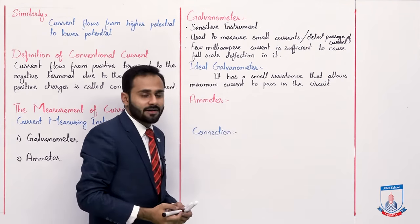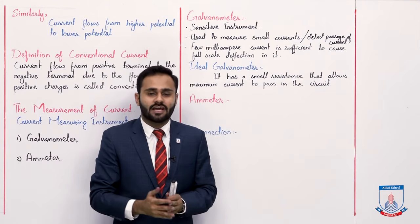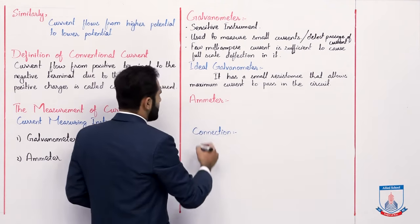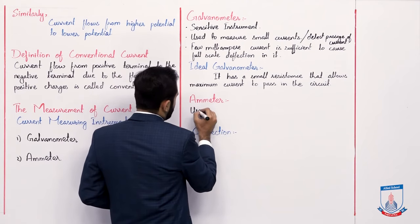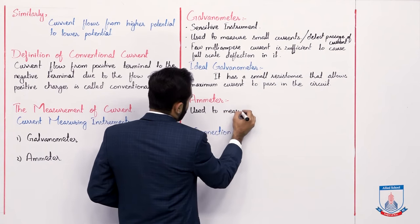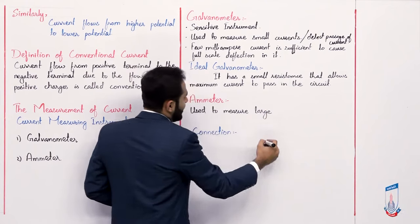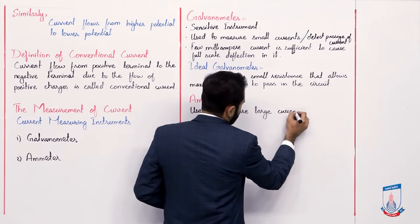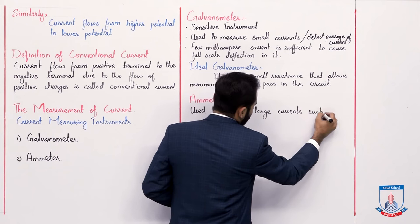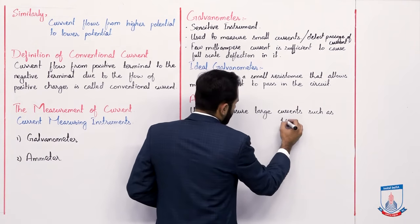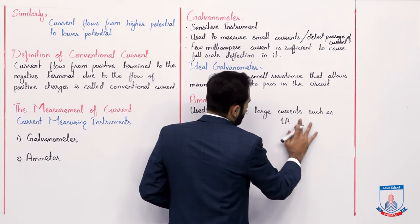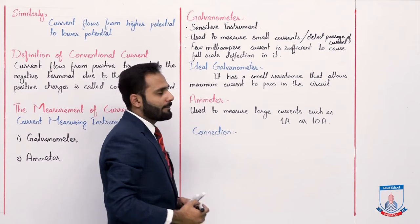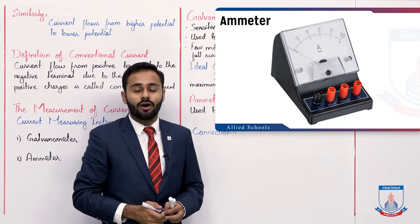Similarly, the ammeter is basically a further modification of the galvanometer. With an ammeter, you can measure large amounts of current as well, such as 1 ampere or 10 ampere current.